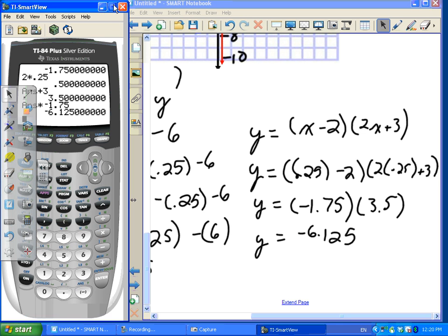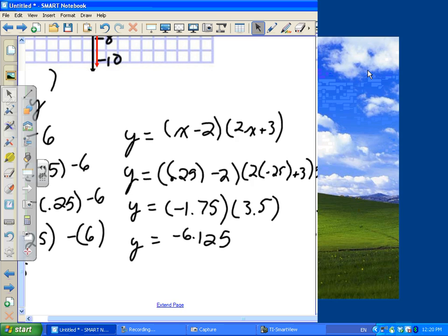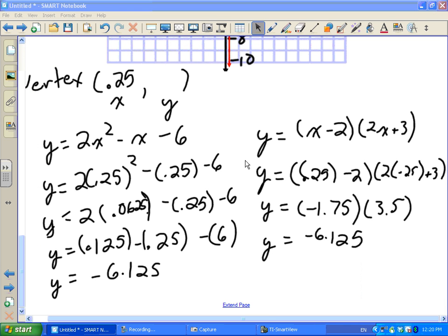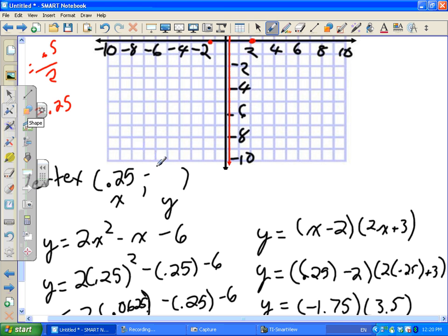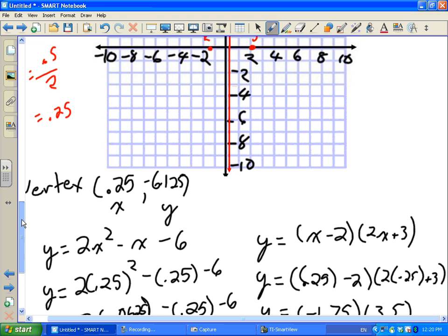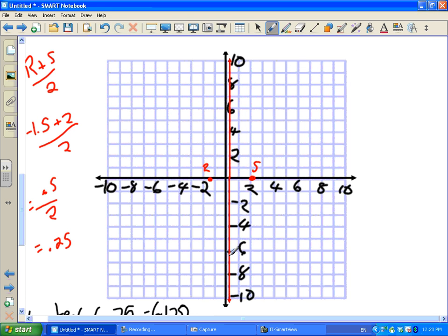There we go. So we can hide that calculator for now. So we take a look at our answers. We have the exact same y-coordinates, which means our vertex is at negative 6.125. And I'm going to do my best to graph it with the graph we have. Negative 6.125 is somewhere here.